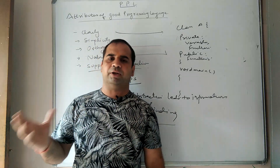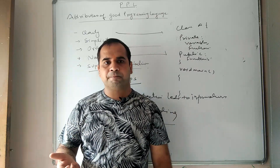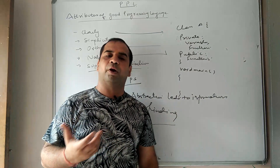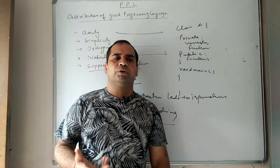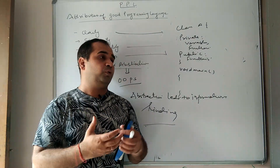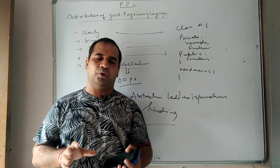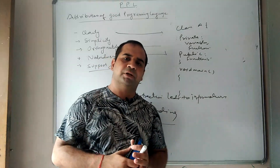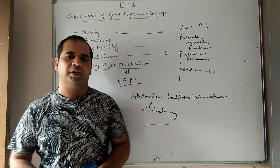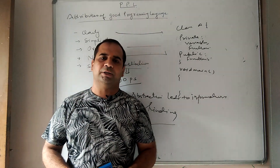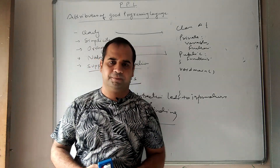Depending upon your needs, you choose your language based on these important attributes. For networking, go for Java. For business analytics, Java or Python. For system programming, go for C++. For logic programming, go for Prolog. So depending upon your needs you choose your language. I hope you liked this lecture — please subscribe to the channel and stay with me for upcoming lectures. Thank you very much.